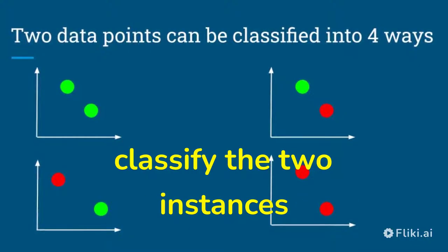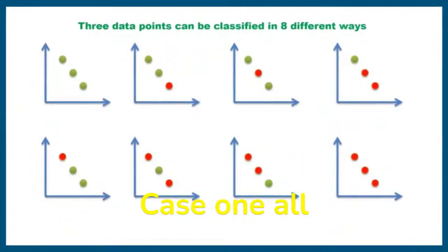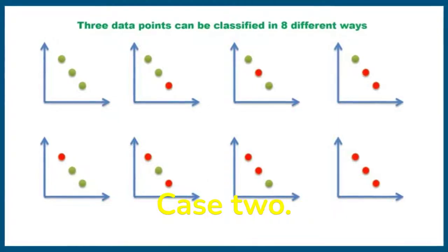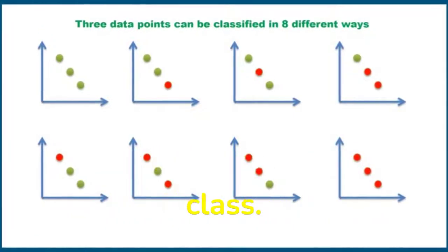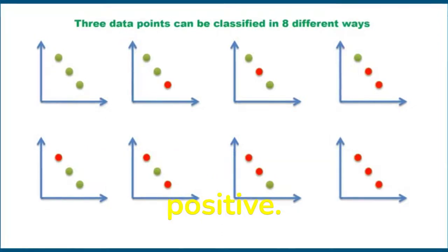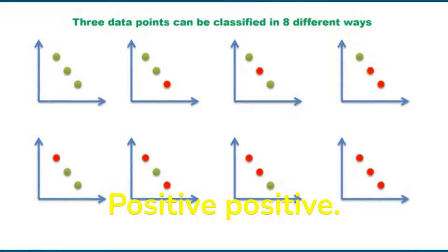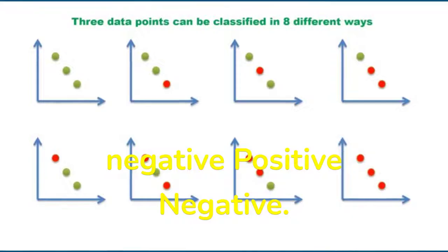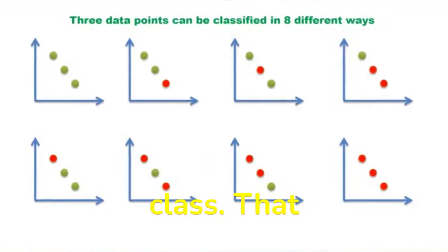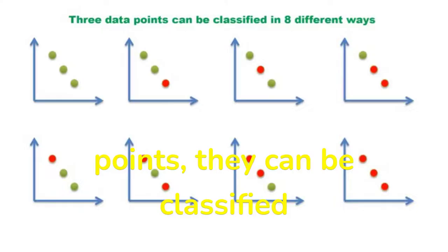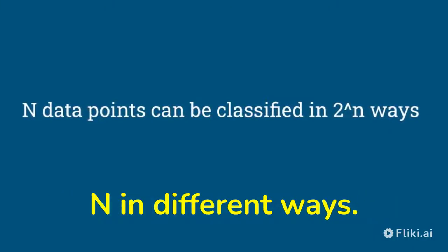That means we can classify two instances or two data points in four different ways. Now assume that we have three instances of data. Case one: all belong to positive class. Case two: the first two belong to positive class and the last one belongs to negative class. Cases three through eight cover all remaining combinations — positive-negative-positive, positive-negative-negative, negative-positive-positive, negative-positive-negative, negative-negative-positive, and all negative. That means if you have three data points they can be classified in eight ways. In general, if you have n data points they can be classified into 2 raised to n different ways.